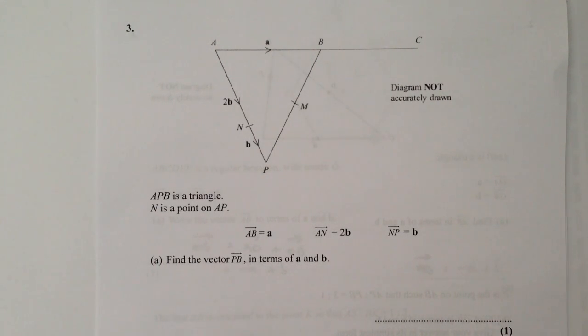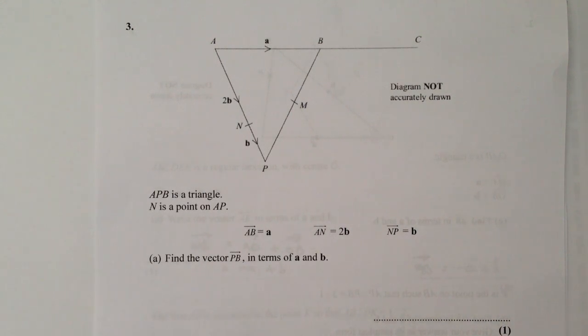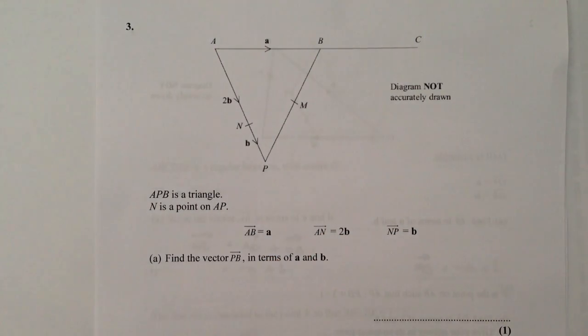So what they're asking us to do is to find the vector PB in terms of A and B. Well, this is the vector PB. Now at the moment, we don't know anything about that. We're going to have to go around the houses and go along PA and then over AB. So if I just write that out, that's going to be vector PB equals vector PA plus vector AB.